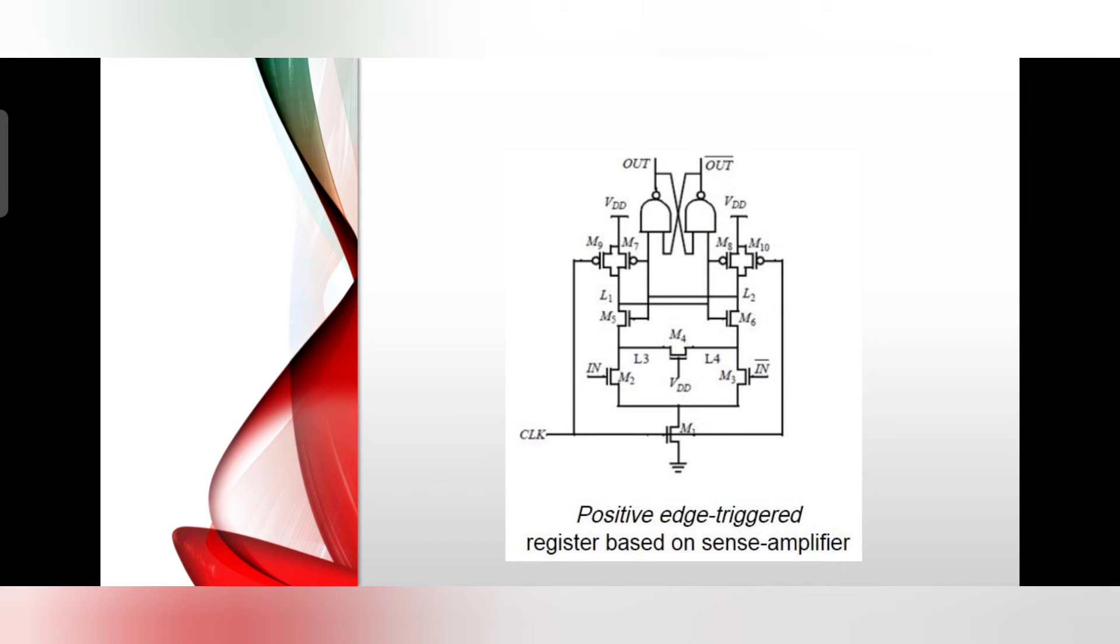The cross-coupled inverter pair flips to one of its stable states based on the value of the inputs. Due to the amplifying property of the input stage, it is not necessary for the input to swing all the way up to VDD, enabling the use of low swing signaling on the input wires.